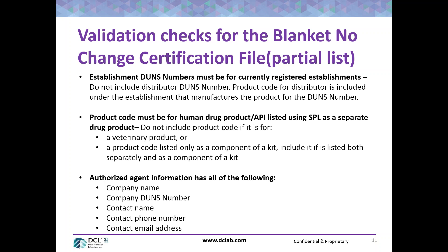The other part is the validation check for the information required for the authorized agent. You must have a company name, a company DUNS number, a contact name, a contact phone number, and a contact email address. All of those are required, and if you don't have them, you will get a validation error.